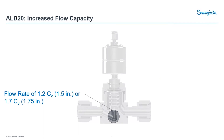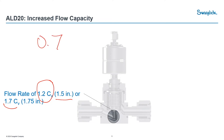The third point is flow capacity. The LD20 comes in a 1.2 Cv flow coefficient for the 1.5-inch valve, and for the slightly larger 1.75-inch version, it has a 1.7 Cv. A conventional ALD valve maxes out at 0.6 or 0.7 Cv — so the LD20 delivers 2x to 3x the flow capacity.